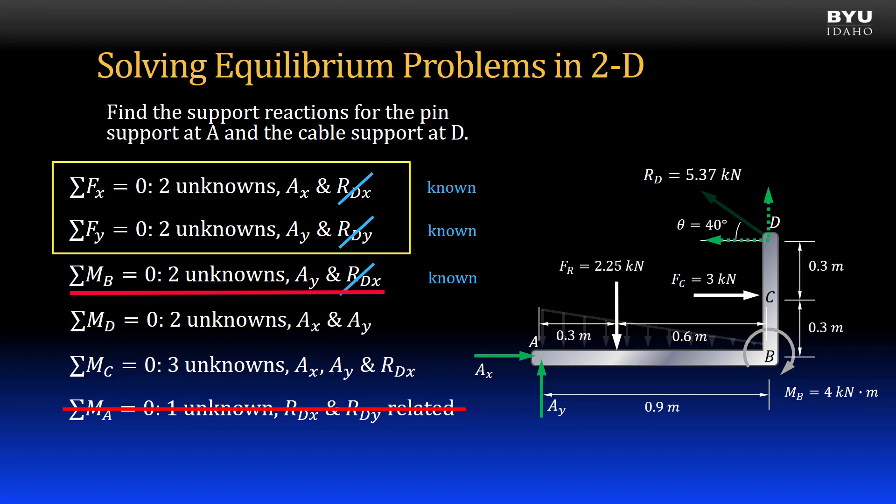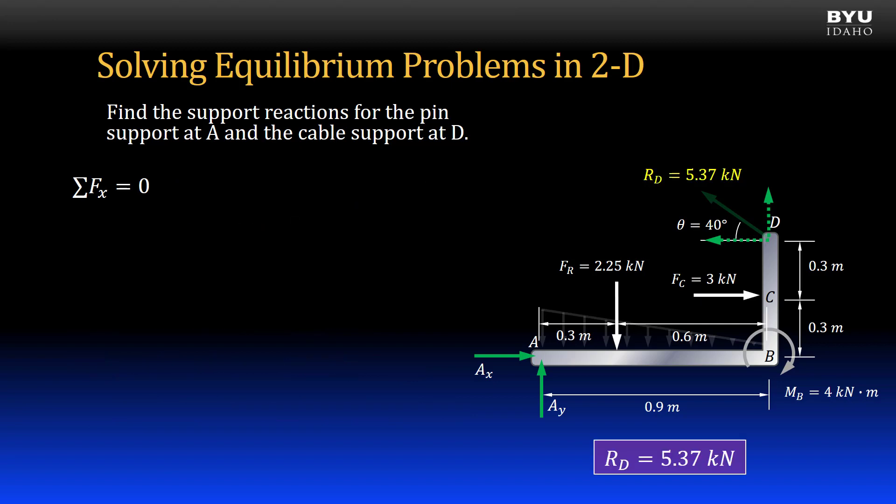Note that summing moments about point B is an alternative to summing forces to 0 in the y direction. Summing forces in the x direction to 0 gives positive Ax plus 3 kN minus the horizontal component of RD equals 0.